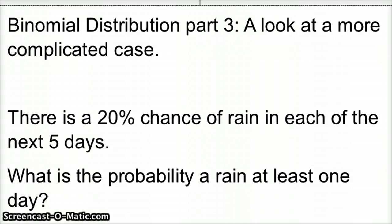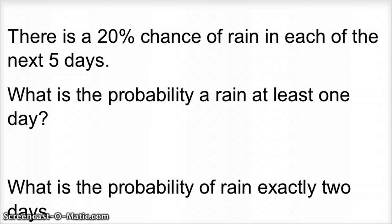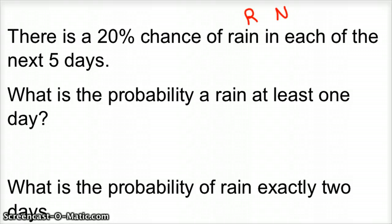So we've done heads and tails, which are always 50-50, which makes the probability kind of hard to track. So with a 20% chance, our yes and our no would be yes rain or no rain each day. Instead of heads and tails, I might use an R for rain and an N for no rain. We're going to deal with five days, just like flipping a coin five times. But you can think of this as a weighted coin — there's only a 20% chance of rain, so we're weighted heavily towards no rain every day.